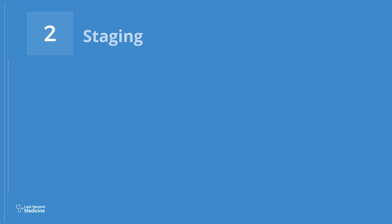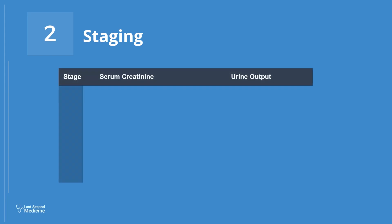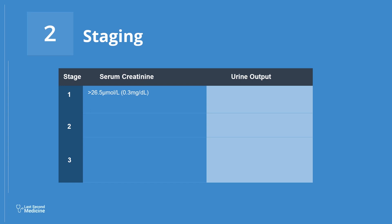Number 2: Staging. Once AKI is diagnosed, its severity shall then be staged. AKI can be staged in one of three stages according to the highest creatinine rise, longest period of oliguria, or severity of oliguria. AKI is Stage 1 when serum creatinine has risen by 26.5 micromole per liter, or the rise in creatinine is 1.5 to 1.9 times that of baseline, or urine output is less than 0.5 milliliters per kg per hour for 6 to 12 hours.